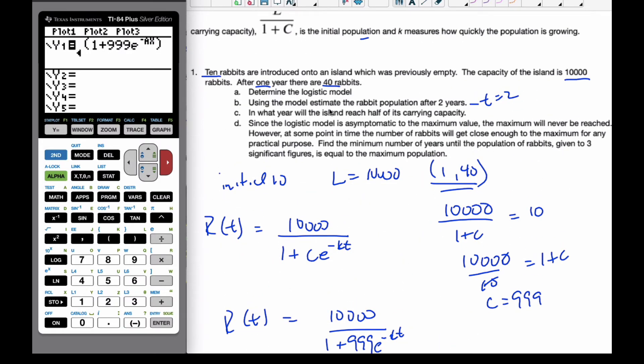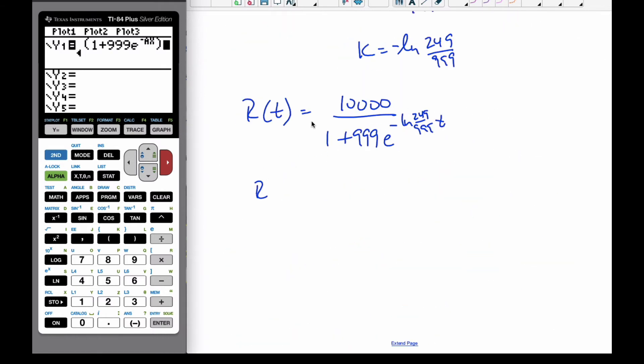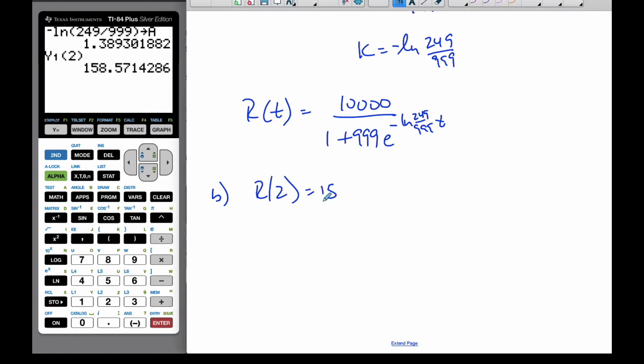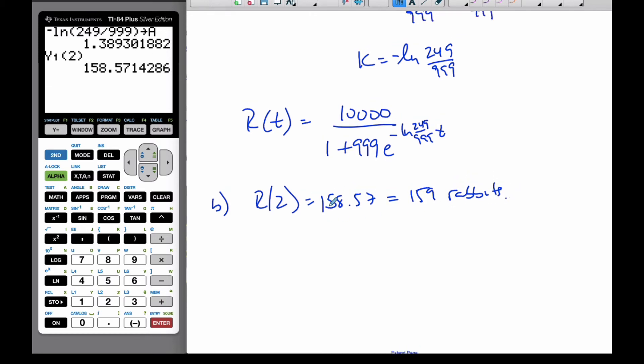Next question is, I want to use the model to estimate rabbit population after two years, so that means T is 2. So, communication-wise, please make sure you do R at 2. You don't have to actually plug it in, but this I need to see. And then you can just use your calculator to find out what R at 2 is going to be. Plug in the 2, and I get 158.57 rabbits, so really it's 159 rabbits to three significant figures after two years.